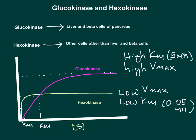Since hexokinase has low Km, it has higher affinity for glucose and will work even under low blood glucose concentration. Glucokinase has high Km, meaning it has lower affinity for glucose — so glucokinase works only when there is plenty of glucose.